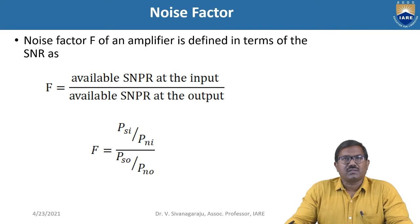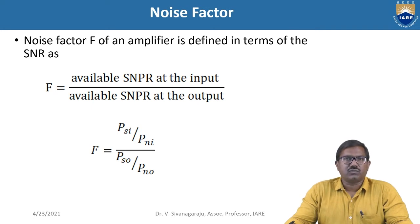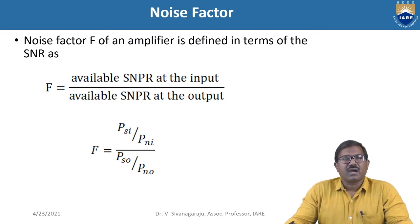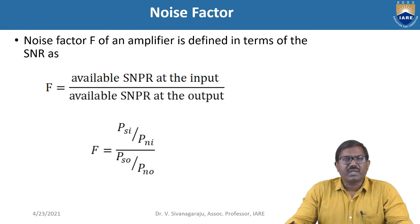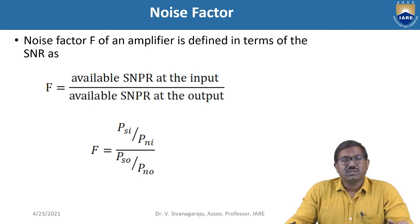What is noise factor? The noise factor of an amplifier is defined in terms of the signal-to-noise ratio. F is equal to the available signal-to-noise power ratio at the input divided by that at the output, written as F = PSI/PNI. By using these equations, we are going to find the noise factor.